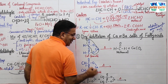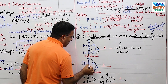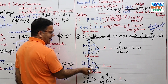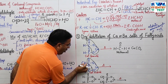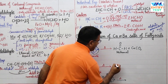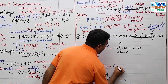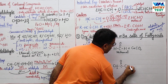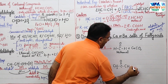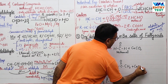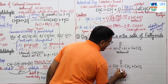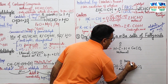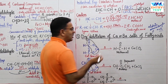For dry distillation of calcium acetate, the products are calcium carbonate (CaCO3) and CH3-CO-CH3, which is acetone — also called propanone or dimethyl ketone.